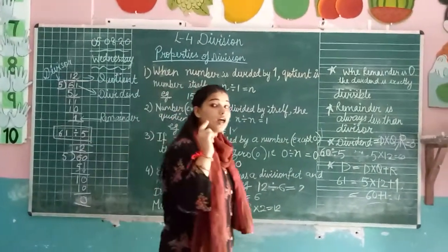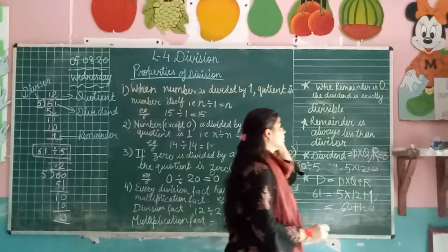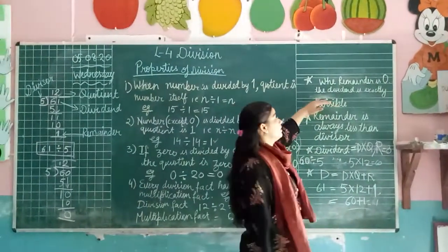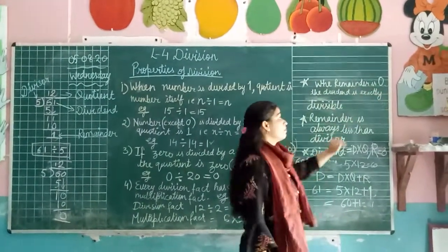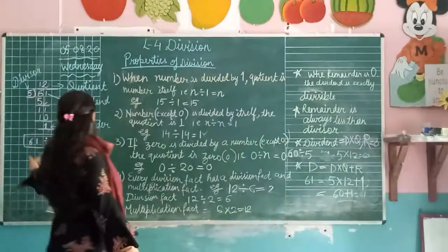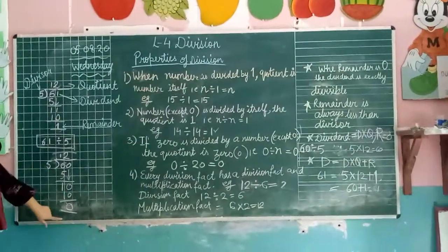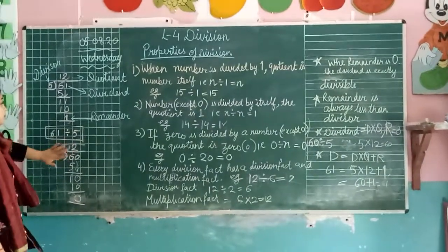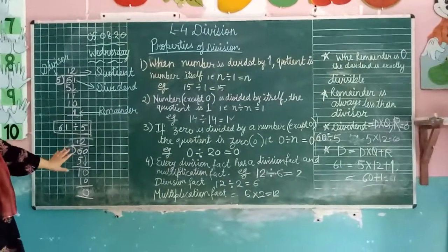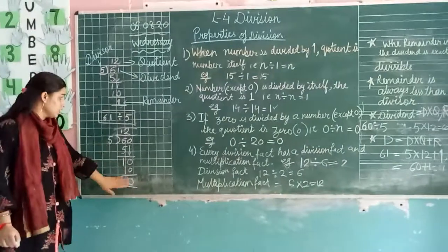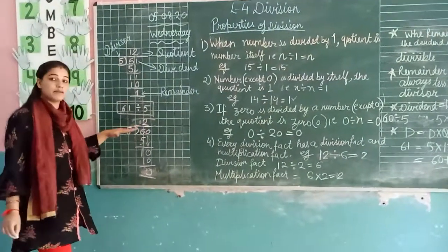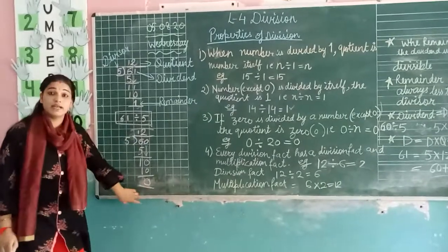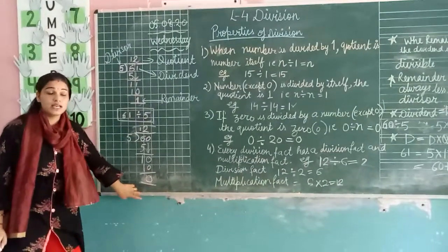There are a few things you should always keep in mind. First, when the remainder is 0 — that is, jab remainder 0 hai — the number is exactly divisible. That means when any number divides another number completely, the remainder will be 0, meaning it appears in the table of the divisor.